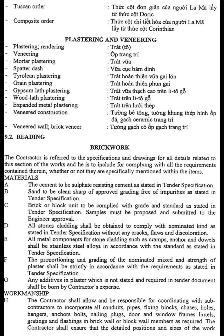9.2 Reading: Brickwork. The contractor is referred to the specifications and drawings for all details related to this section of the works, and he is to include for complying with all the requirements contained therein, whether or not they are specifically mentioned within the items. Materials: A. The cement to be sulfate-resisting cement as stated in tender specification. B. Sand to be clean, sharp, of approved grading, free of impurities as stated in tender specification. C. Brick or block unit to be complied with grade and standard as stated in tender specification.